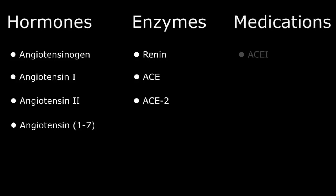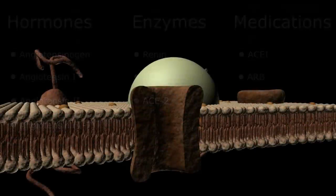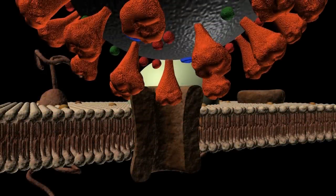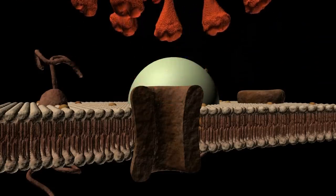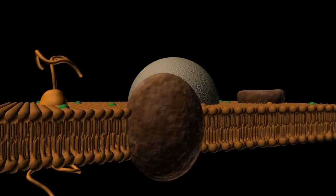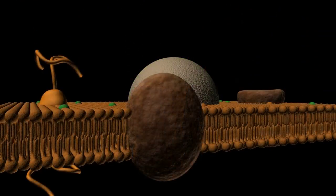Medications are angiotensin-converting enzyme inhibitors or ACEIs and angiotensin receptor blockers or ARBs. Now, back to our SARS-CoV-2 receptor. At first, it may seem sort of random that SARS-CoV-2 targets this particular pressure-modulating surface protein in the body, but it's actually brilliant by design. Remember, the goal of the virus is to reproduce and infect as many hosts as possible to ensure its existence.